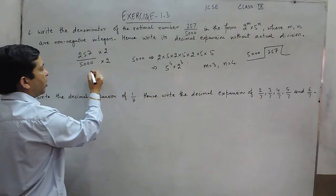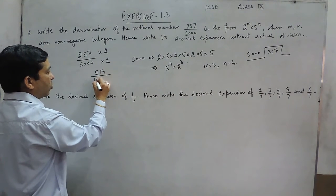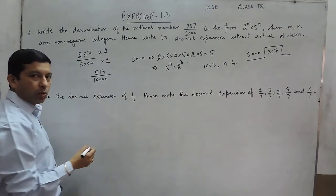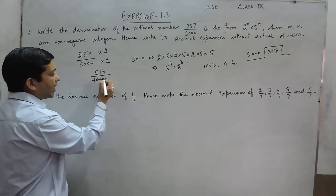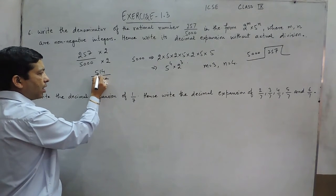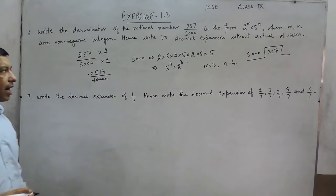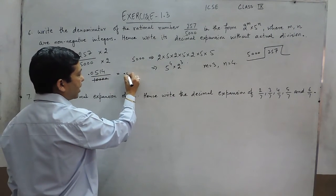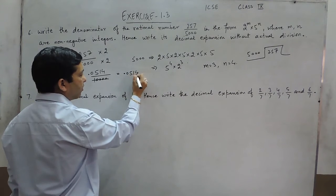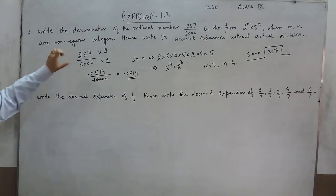So when multiplying it, 2 multiplied by 257 is 514 upon, this comes out to be 1 with 4 zeros. And when I am cancelling these 4 zeros, the decimal place has to be shifted as 1, 2, 3. And we have to put a zero before this and a decimal. So the answer comes out to be 0.0514. So this is the answer for this particular fraction.